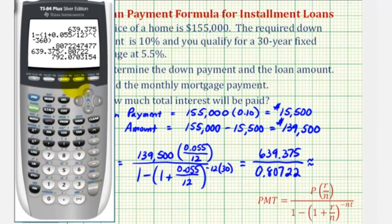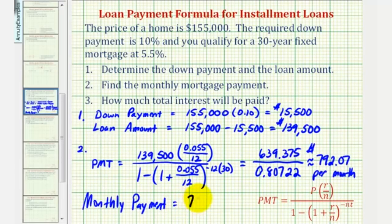So the monthly payment is going to be approximately $792.07. Keep in mind this does not include taxes and insurance. Let's also verify this using the finance menu of the graphing calculator.